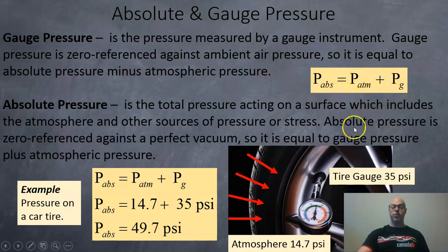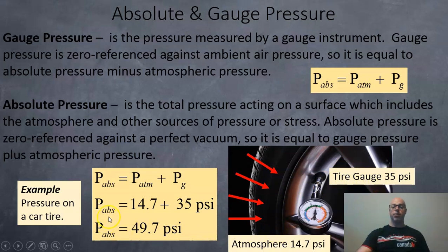For example, a tire gauge would read 35 PSI, but the atmosphere is 14.7 PSI. So what's the absolute pressure? 14.7 from the atmosphere plus 35 from what's been inflated into the tire — altogether the tire is experiencing 49.7 PSI of absolute pressure.